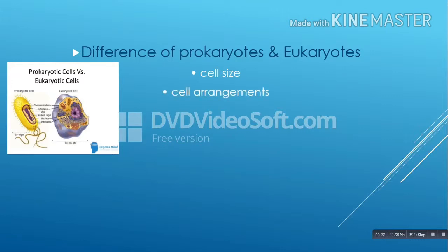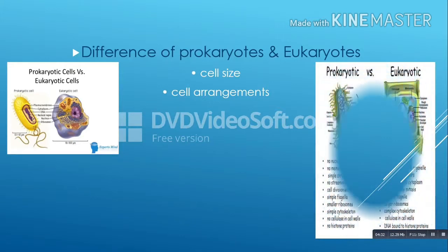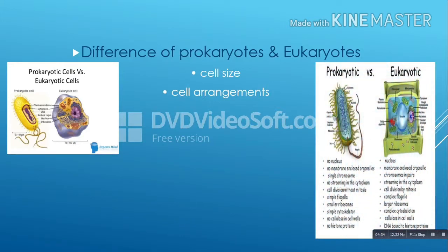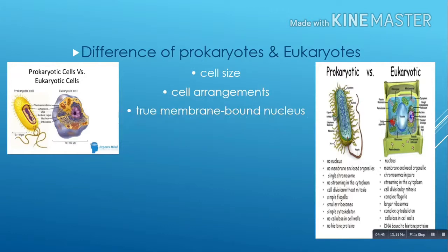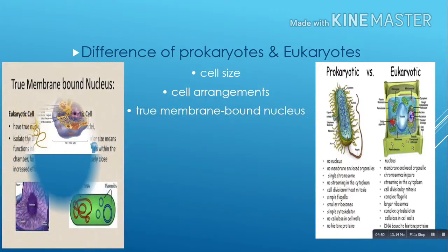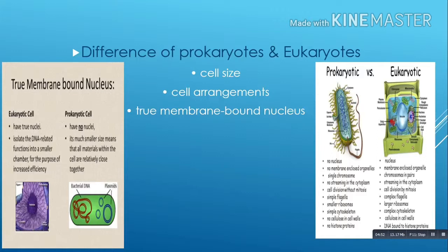There are, however, some exceptions. Unicellular eukaryotes include amoebas, paramecium, and yeast. Next, the third difference is the true membrane-bound nucleus. Eukaryotic cells have a true nucleus bound by a double membrane. It contains the DNA-related functions of the large cell in a smaller enclosure to ensure close proximity of materials and increased efficiency for cellular communication and functions.